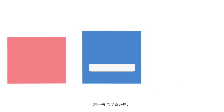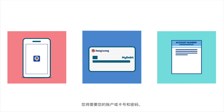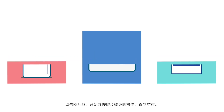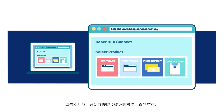For current or savings account, you will need your account or card number and PIN. For fixed deposit and loan account, you'll need your account number and temporary ID. Temporary ID can be obtained from the branch or by calling our customer service. Click on the image box to begin and follow the step-by-step instructions till the end.